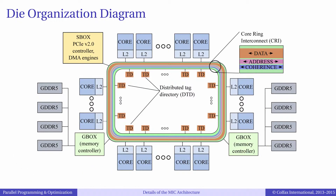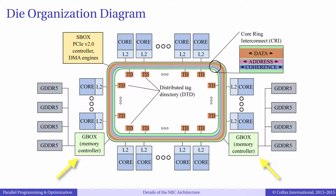Let's take a look at the organization diagram for the Knight's Corner chip on which the Xeon Phi Coprocessor is built. The Coprocessor contains 62 cores of which 57, 60, or 61 are active. Those cores are connected to each other with a data bus called the CoreRain interconnect. There are eight memory controllers on the CoreRain interconnect providing access to the onboard GDDR5 memory. The ring also interconnects components of the distributed tag directory which helps to maintain cache coherency in parallel.